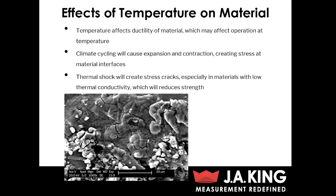Before we go into the different types of environmental testing, I want to talk a little bit about the effects that temperature can have on material. Temperature is one of the main parameters in an environmental test, so it's important to understand how temperature can affect your parts. It can affect the ductility of material, which can affect operation at temperature. Typically materials are going to be more ductile at high temperatures and more brittle at low temperatures.